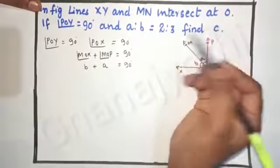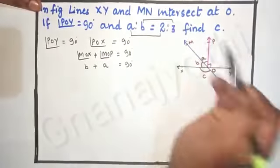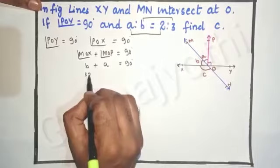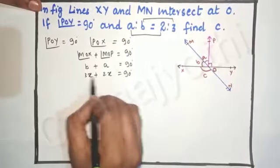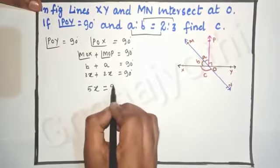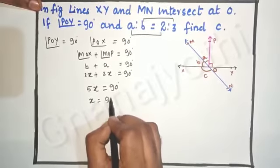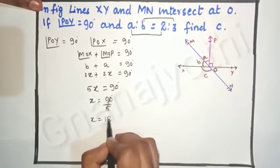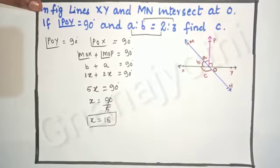Here, a is to b means a equals 2 and b equals 3. So we write 2x plus 3x equals 90 degrees. That gives 5x equals 90 degrees, so x equals 90 divided by 5, therefore x is equal to 18 degrees.